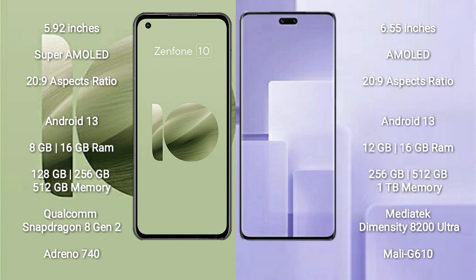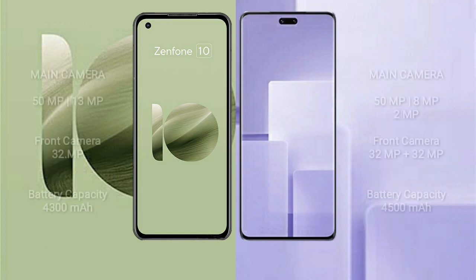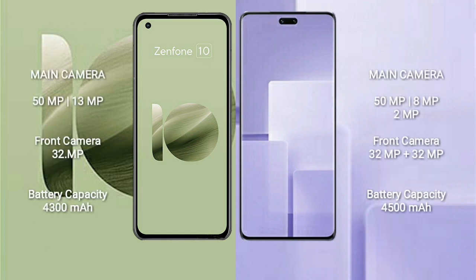Xiaomi CV3 comes with 12GB and 16GB RAM, with 256GB, 512GB, and 1TB internal storage. It is powered by the MediaTek Dimensity 8200 Ultra processor with GPU Mali-G610. Asus Zenfone 10 has a rear dual-camera setup of 50MP plus 13MP.